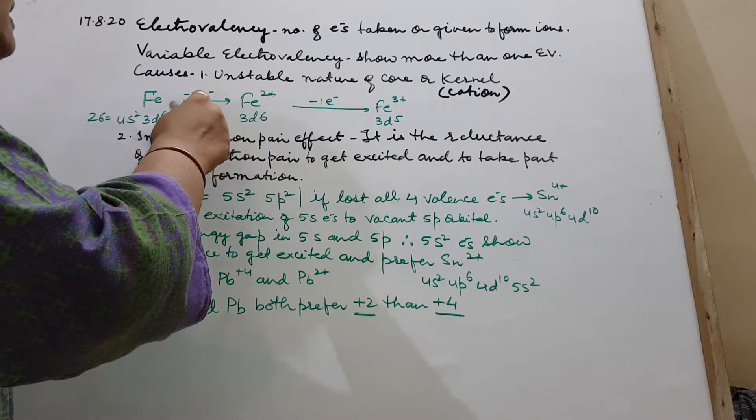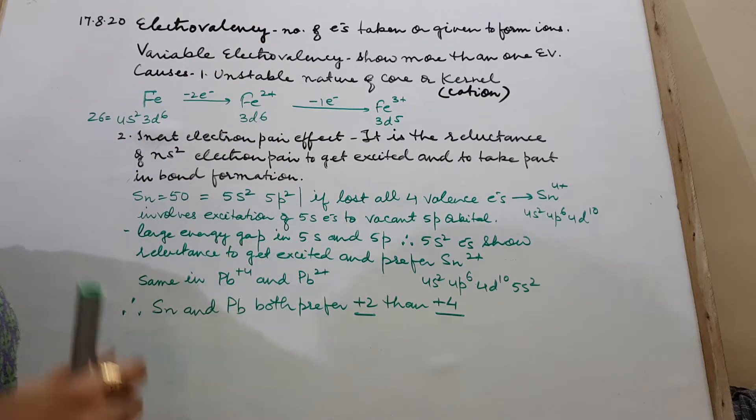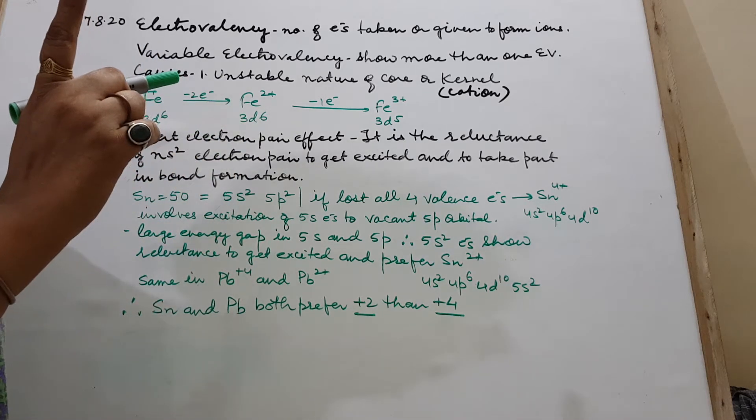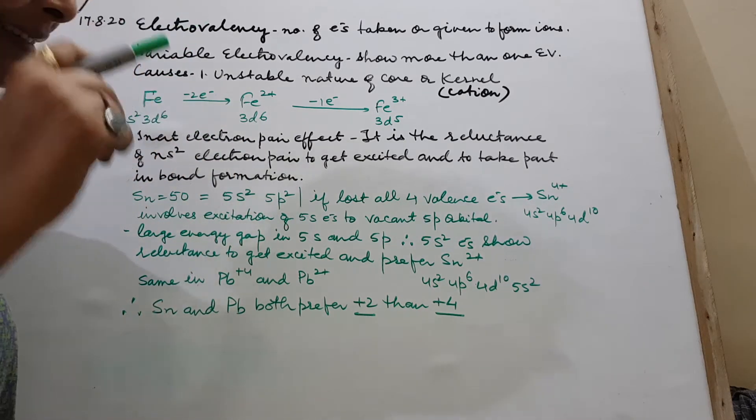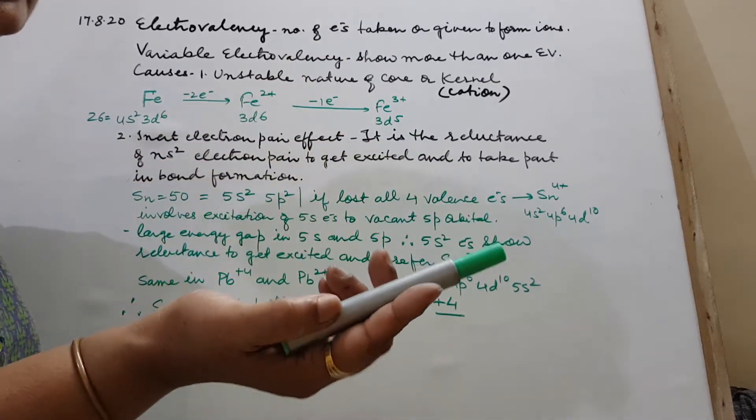So it released two electrons of the outer shell, 4s2, and got converted to 3d6. Now what happens? 3d6, you know, is not that stable as 3d5. 3d5 is exactly half filled.